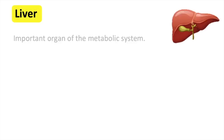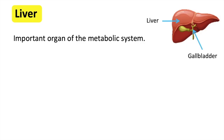The liver plays a vital role in the body's metabolic system. The liver processes contents of the blood to ensure the composition stays the same, and does this in many different ways. The organ is located just under the ribcage, on the right upper side of the abdomen, near the gallbladder. The liver is supplied with oxygenated blood via an artery.